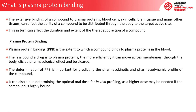Plasma protein binding, also known as PPB, is the extent to which a compound binds to plasma proteins in the blood. The less bound a drug is to plasma proteins, the more efficiently it can move across membranes through the body, elicit a pharmacological effect, and be cleared. The determination of PPB is important for predicting the pharmacokinetic and pharmacodynamic profile of a compound. It can also aid in determining the optimal oral dose for in vivo profiling, as a higher dose may be needed if the compound is highly bound.